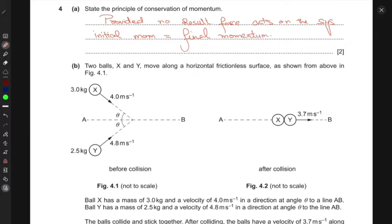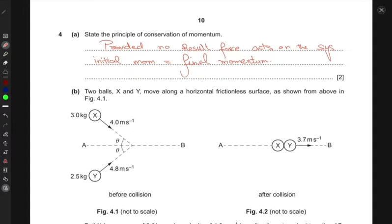That should make sense because force is the rate of change of momentum. If there is a resultant force acting on the system, it will cause a change in momentum of that system. But if the resultant force is zero, then there would be no change in momentum. Hence, initially and finally, the momentum would be conserved.